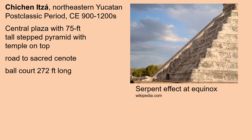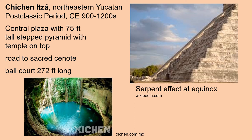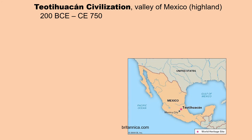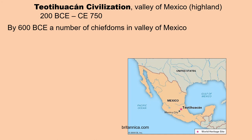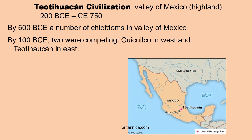Chichen Itza also had a road to a nearby sacred cenote and a ball court 272 feet long. Let's move on to the Teotihuacan civilization in the Highland Valley of Mexico, adjacent to current-day Mexico City, from 200 before the Common Era to Common Era 750. By 600 before the Common Era there were a number of chiefdoms in the Valley of Mexico. By 100 before the Common Era, two were competing: Kuikulco in the west and Teotihuacan in the east. But a volcanic eruption buried the former, leaving Teotihuacan to become the center of the Teotihuacan civilization.